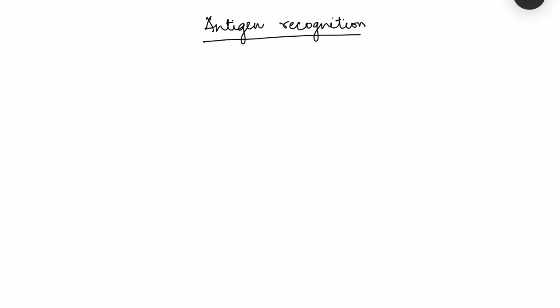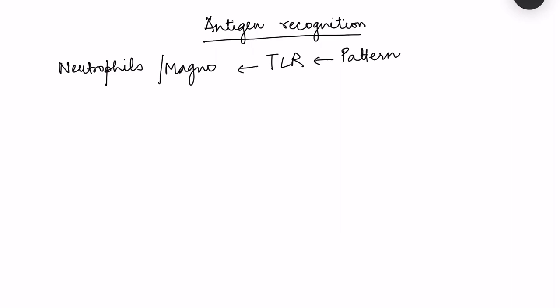Different types of WBCs recognize antigens differently. Neutrophils and macrophages phagocytose antigens and identify microbes by means of toll-like receptors, also known as PRR - that is the pattern recognition receptors - which identify certain patterns on microbes.